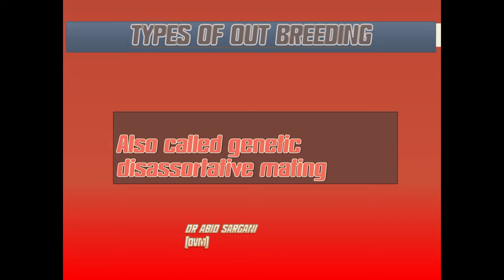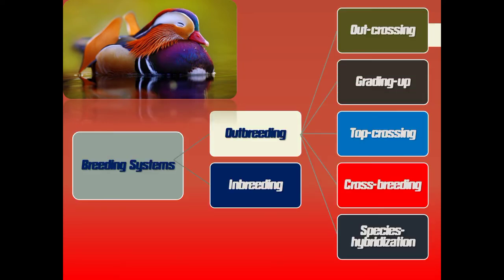Generally, outbreeding is also known as genetic dissortative mating. The breeding systems have been categorized into two: outbreeding and inbreeding systems. Outbreeding means mating between unrelated individuals, while inbreeding refers to mating between related individuals up to four to six generations, meaning they are directly or indirectly related to their parents. In outbreeding they are totally unrelated. Examples include outcrossing, grading up, top crossing, crossbreeding, and species hybridization.